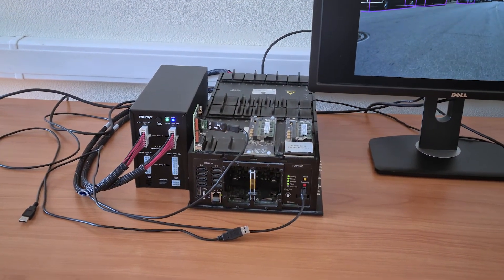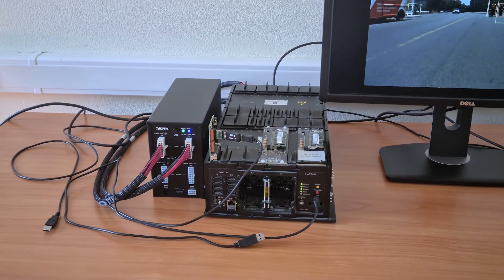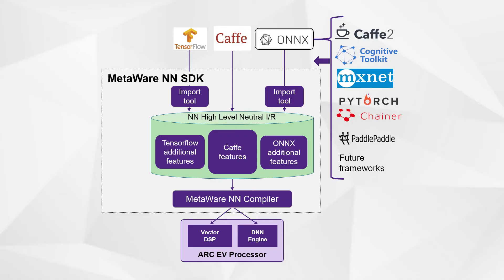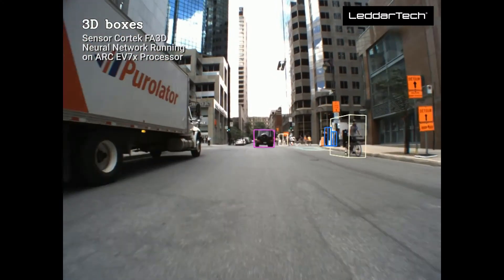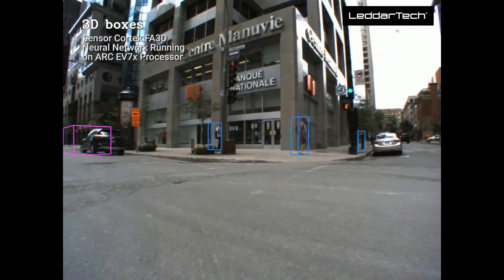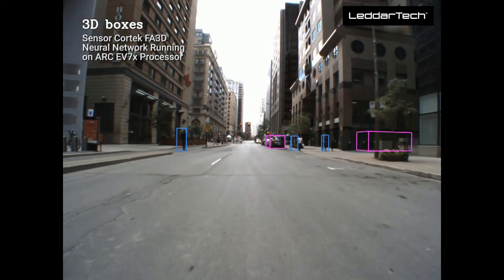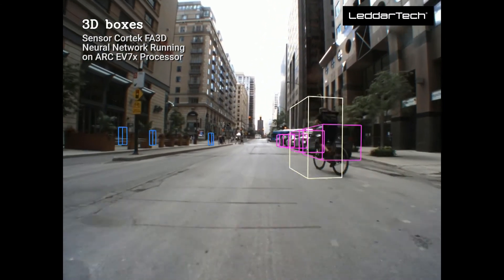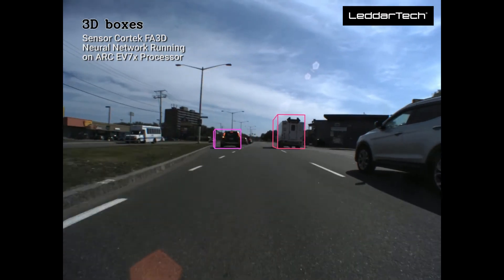The HAPS is a very popular system for anyone who needs to prototype their hardware and software design. To implement our LiDAR-based object detector, we used the MetaWare Neural Network SDK to compile the graph for execution on the DNN accelerator. The Neural Network SDK is part of the MetaWare AV development toolkit, a comprehensive suite of tools for embedded vision and machine learning. Here are some driving scenes from the PIXSET dataset, developed by LiDARtech, which we used as inputs to our demo. The FA3D neural network running on the EV can detect cars, pedestrians, and cyclists.